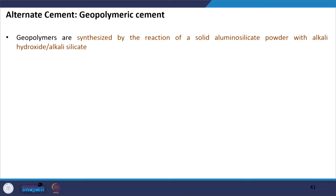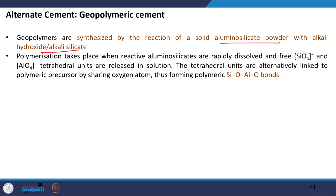Geopolymers are synthesized by the reaction of solid alumino-silicate powder with alkali hydroxide or alkali silicate — sodium silicate, sodium hydroxide, potassium hydroxide, or potassium silicate. Polymerization takes place when reactive alumino-silicates are rapidly dissolved, freeing SiO4⁻ and AlO4⁻ ions. The silica and alumina parts get separated and form tetrahedral units, which are alternatively linked to the polymeric precursor by sharing oxygen atoms, forming Si-O-Al-O bonds. This is what typically happens during production of geopolymeric material.